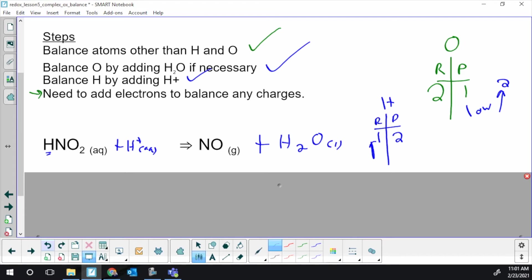Now we've got this last step that you haven't seen before: we need to add electrons to balance any charges. So I'm going to switch to red, and I'm tracking charges now, not oxidation numbers, and I'll have a charge table.